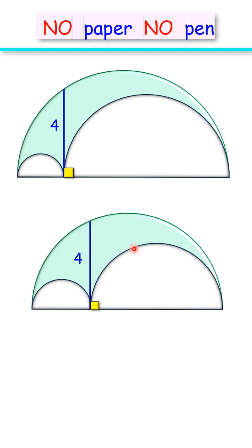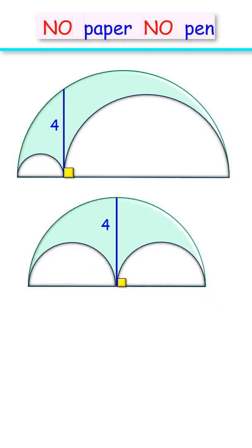Thus, the area of this green shaded region should remain the same, otherwise the question will become invalid. This figure still meets all original conditions, but now this blue line segment is also the radius of this green semicircle.